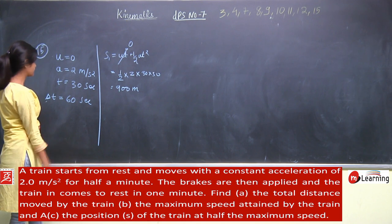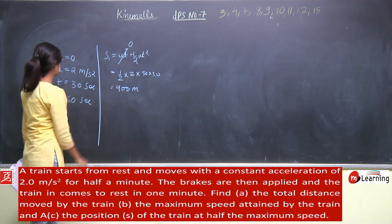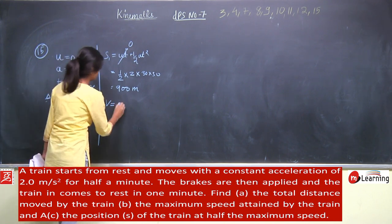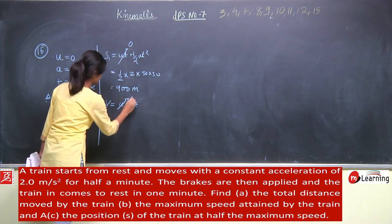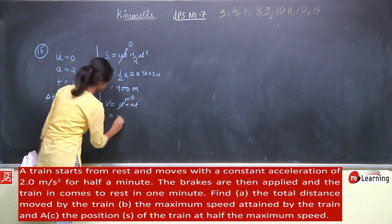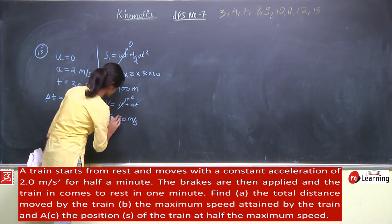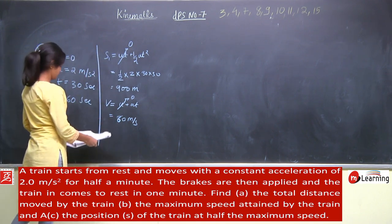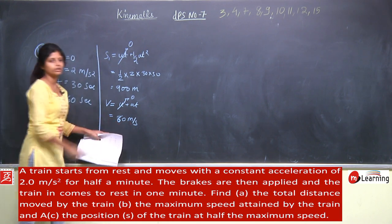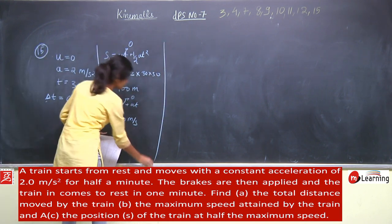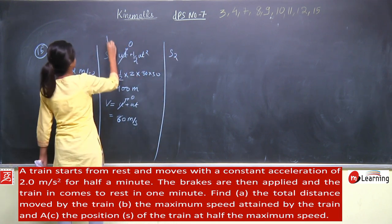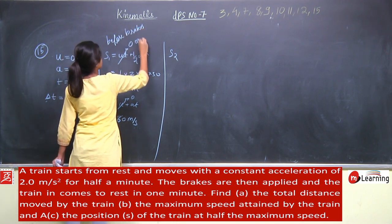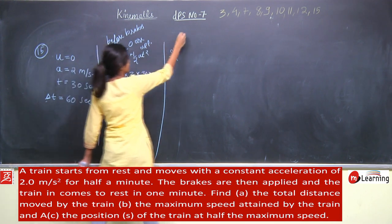After covering 900 meter, what will be the speed? Using v equals u plus at, with u equal to 0, a equal to 2 and t equal to 30, the final velocity is 60 meter per second. So the train reaches 60 meter per second before the brakes are applied. Now, what distance does it cover after the brakes are applied?